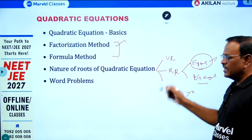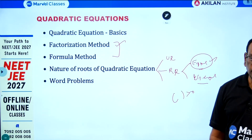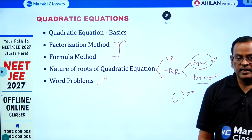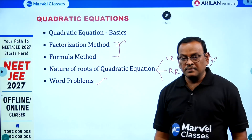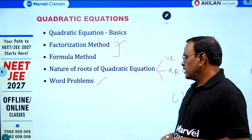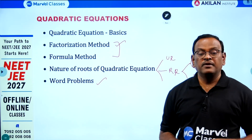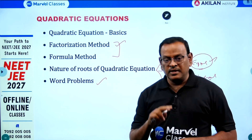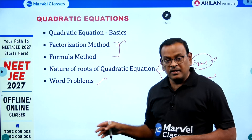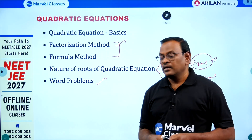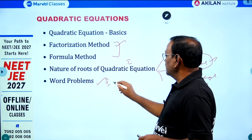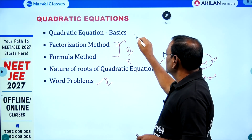No real roots — you can expect this only in one-mark questions. Word problems: similar to linear equations, more than 30 types are there, but additional types in quadratic include speed of a boat, speed of a stream, two types of upstream-downstream problems, and distance-speed-time related quadratic problems. First preference is the nature of roots, then word problems, then factorization, and fourth is basics.